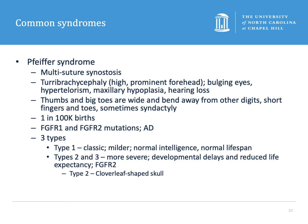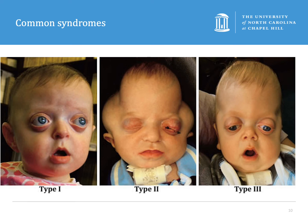The third most common craniofacial syndrome associated with multi-suture synostosis is Pfeiffer syndrome. This is also an FGFR mutation occurring in 1 in 100,000 births and is autosomal dominant. It is characterized by turribrachycephaly — a short and tall head due to coronal and sagittal suture fusion — bulging eyes, hypertelorism, maxillary hypoplasia, and hearing loss. These patients typically have wide and short thumbs and toes. There are three types of increasing severity, and the most severe can be associated with a cloverleaf skull resulting from premature fusion of the coronal, sagittal, and lambdoid sutures, as seen in the middle picture. Patients with cloverleaf skull need to be treated much sooner as there is no room for brain growth.